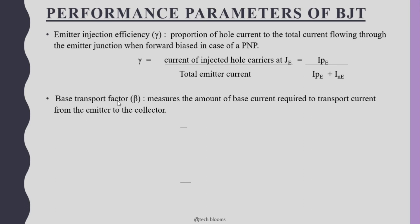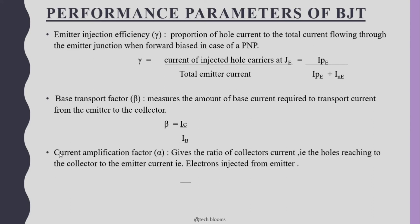Next is the base transport factor, beta (β*), which measures the amount of base current required to transport current from the emitter to the collector. The transporting capacity increases with increasing β, and β increases when the base width is smaller. β* = IPC / IPE.